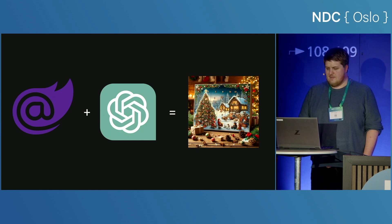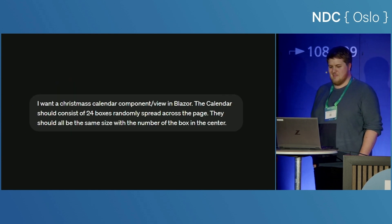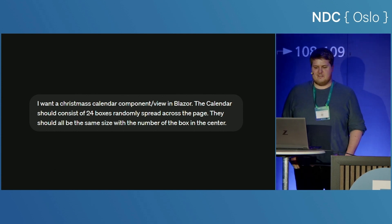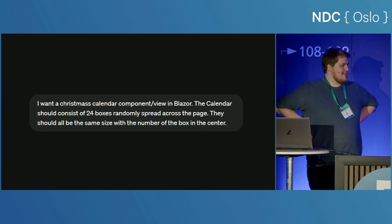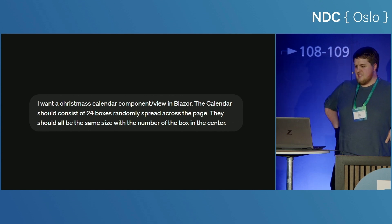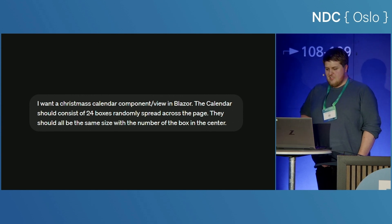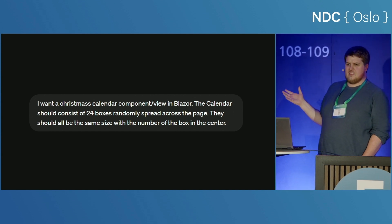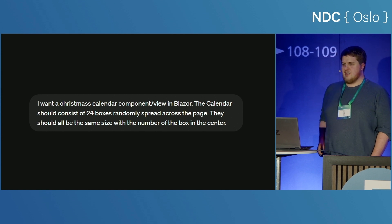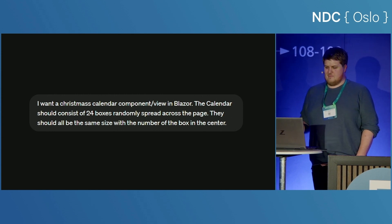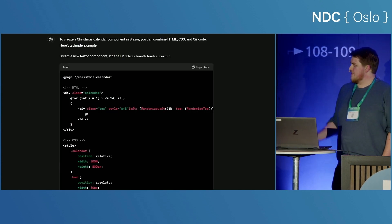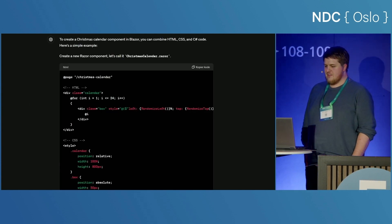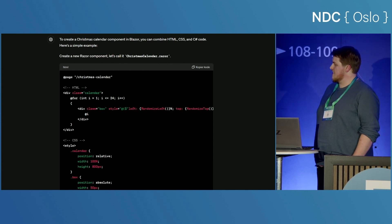The first thing was the first prompt — a very simple one: 'I want a Christmas calendar component in Blazor. The calendar should consist of 24 boxes randomly spread across the page, all the same size with the number of the box in the center.' We imagined something like a traditional Christmas calendar where you open a little door and instead of a chocolate, a colleague's face shows up. ChatGPT delivered an answer with some code, mainly HTML and CSS to begin with.